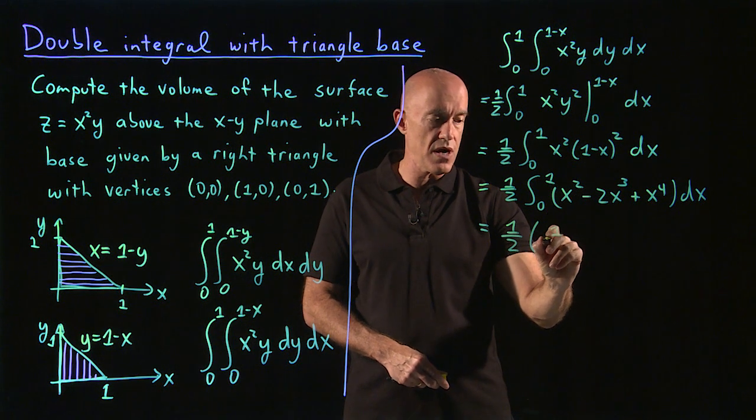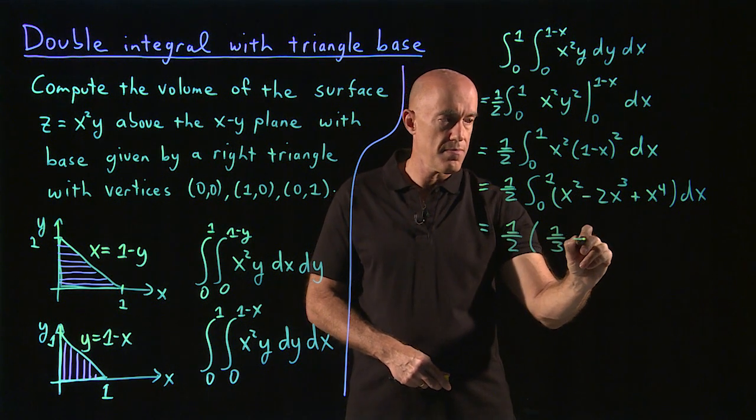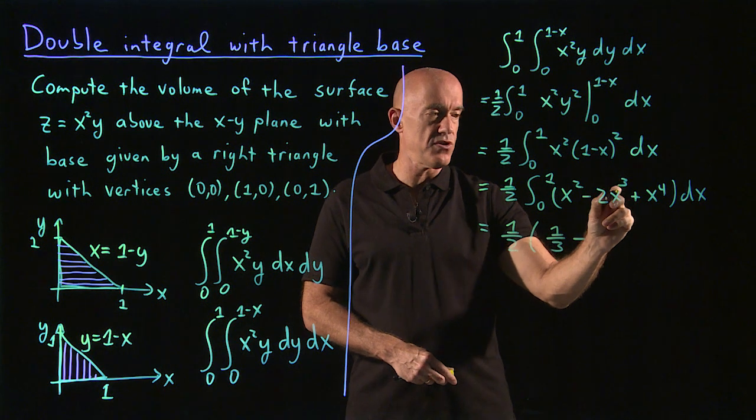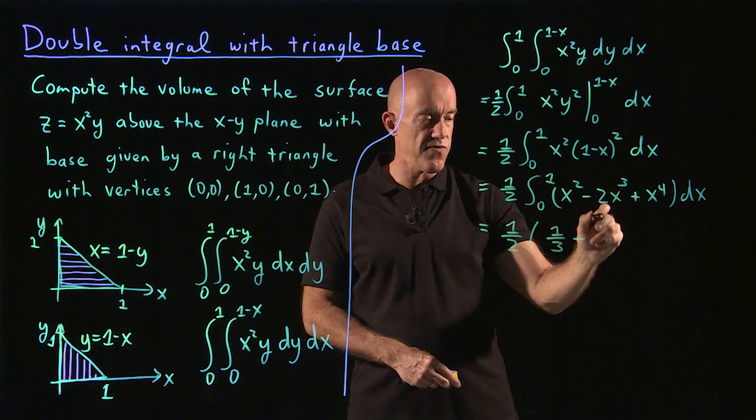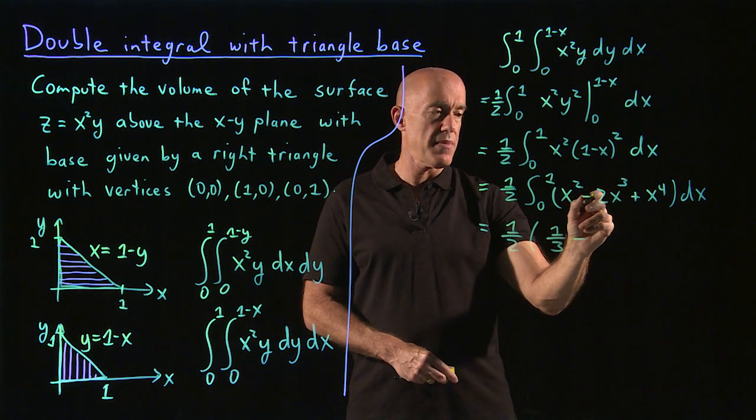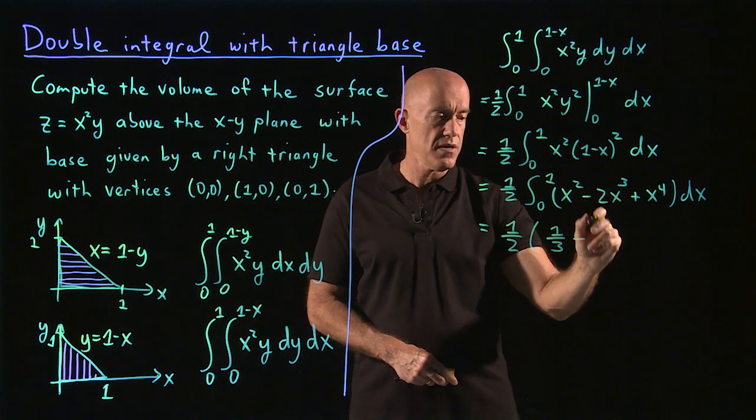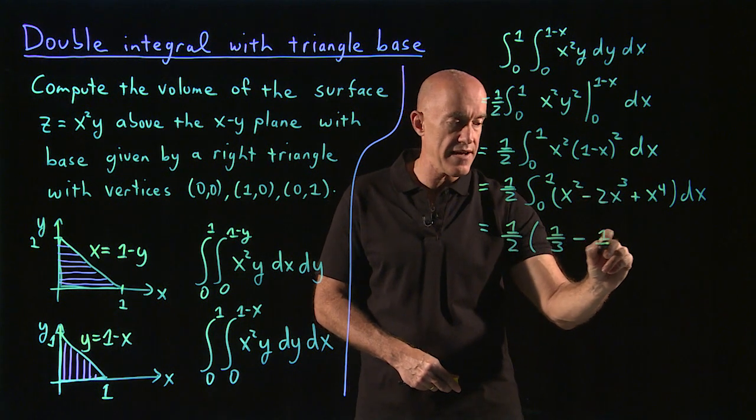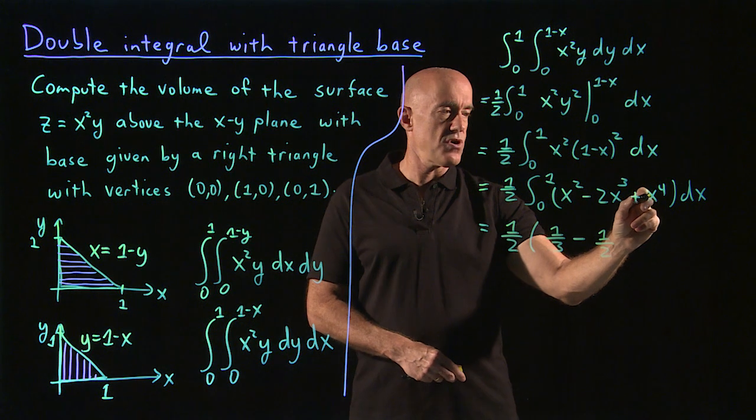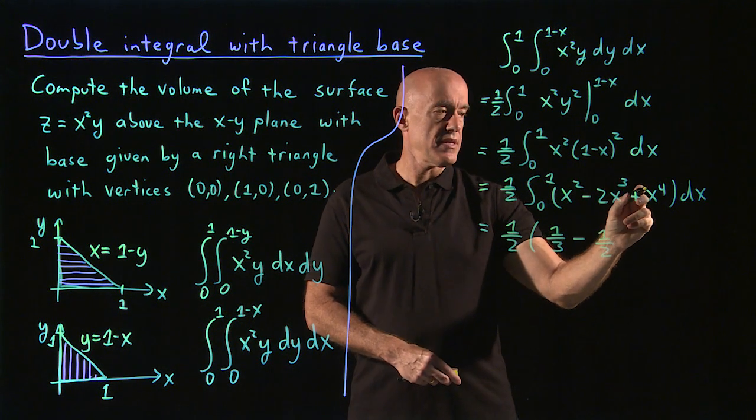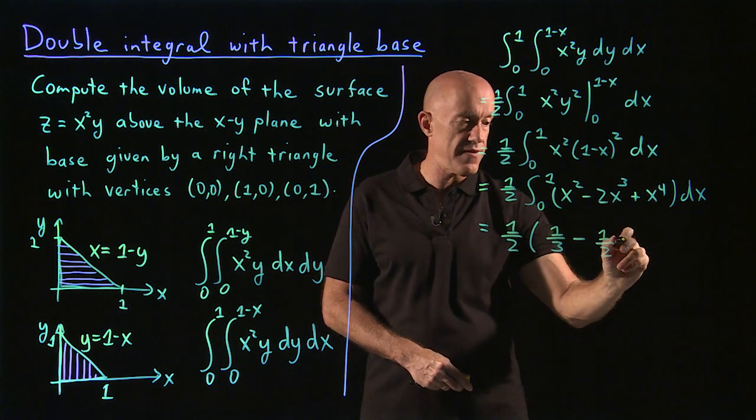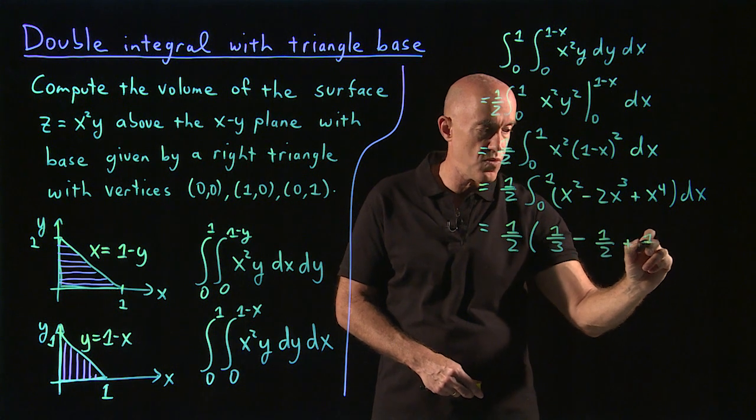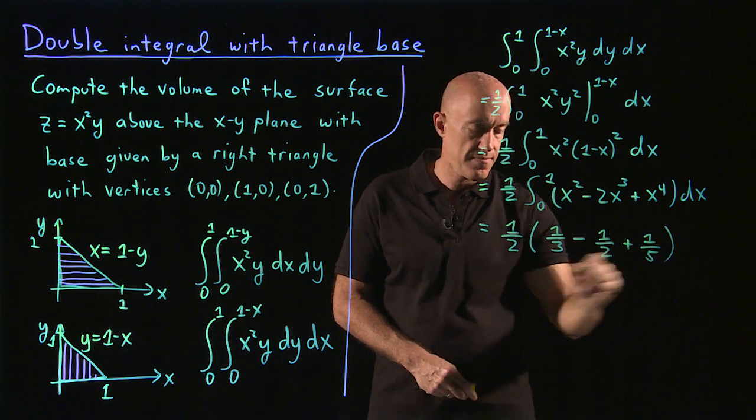So the integral of x squared is x cubed over 3, so that will give us a 1 third. Minus the integral of x cubed is x to the fourth over 4, so that will give us a minus 2 over 4, which is minus 1 half, and then the integral of x to the fourth is x to the fifth over 5. So that will give us plus a 1 fifth.